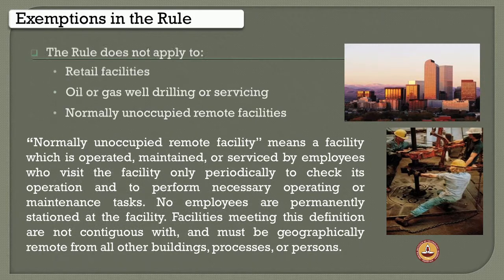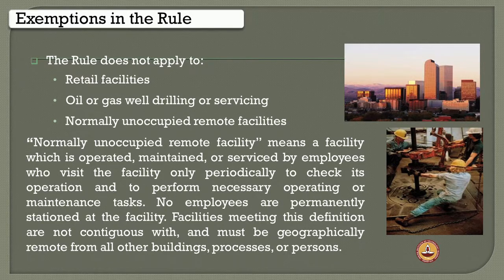In implementing process safety management, there are some exemptions to the rule. They do not apply to retail facilities, oil and gas well drilling or servicing units, and normally unoccupied remote facilities. An unoccupied remote facility means a facility operated, maintained or serviced by employees who visit only periodically to check its operation and perform necessary operating or maintenance tasks — no employees are permanently stationed at the facility. Such facilities must be geographically removed from all other buildings, processes or persons in the near vicinity — they are physically, geographically and economically isolated from the existing system.